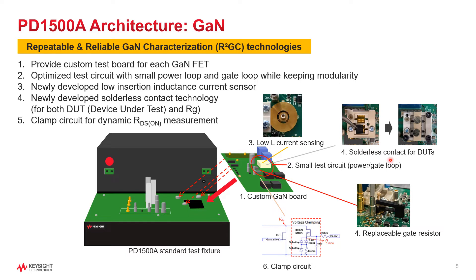Another R2GC technology is the solderless contact technology for both DUTs and gate resistors, which makes it much easier to test multiple samples under multiple RG conditions. We also developed a clamp circuit to evaluate dynamic RDS-ON within hundreds of nanoseconds after the switch event.